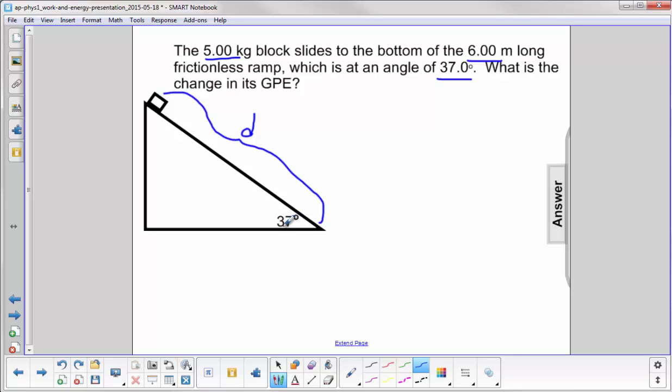Now to find the change in gravitational potential energy, we're interested in the height difference. So right at the bottom, that's going to be our final height, hf.